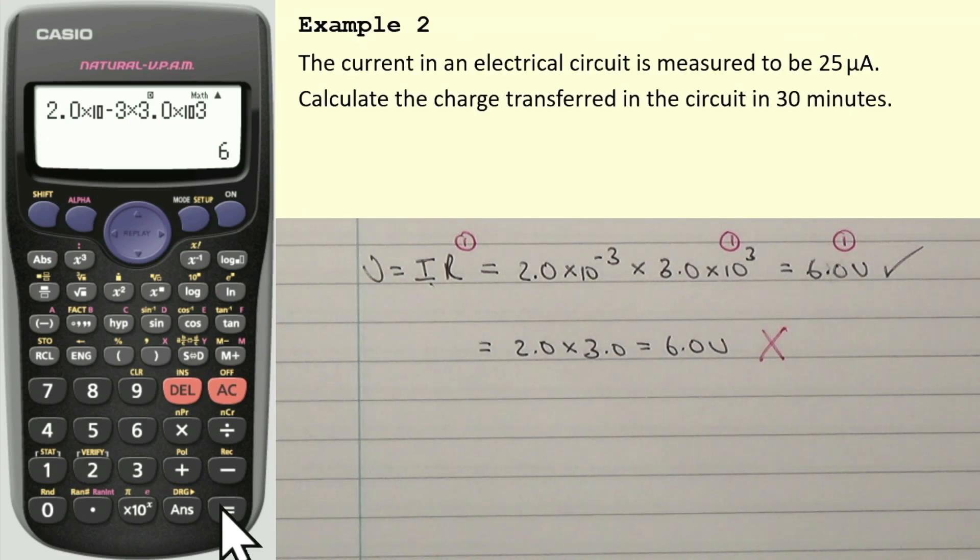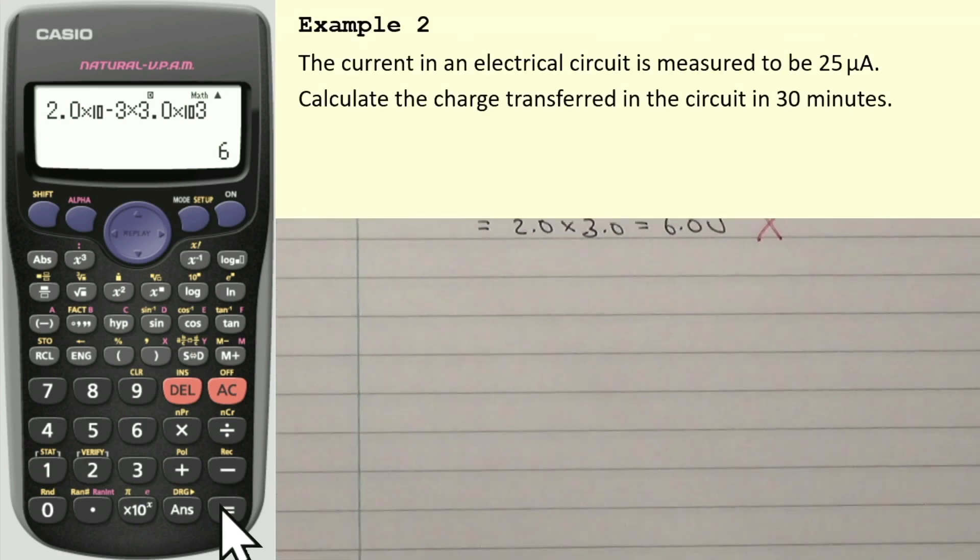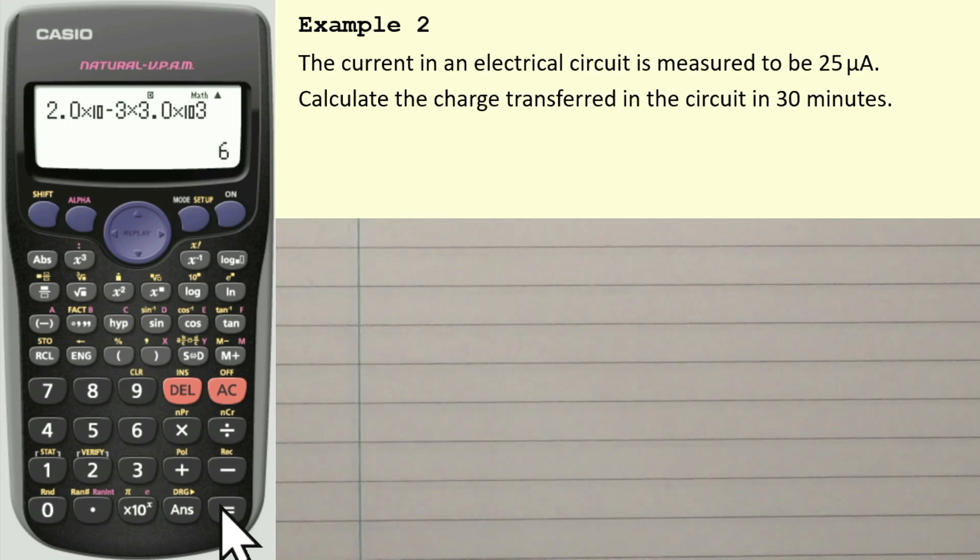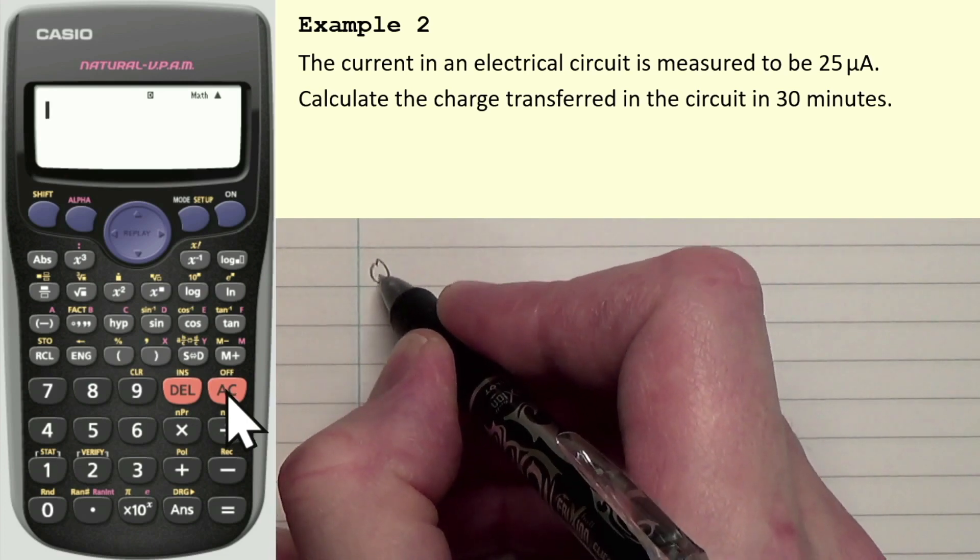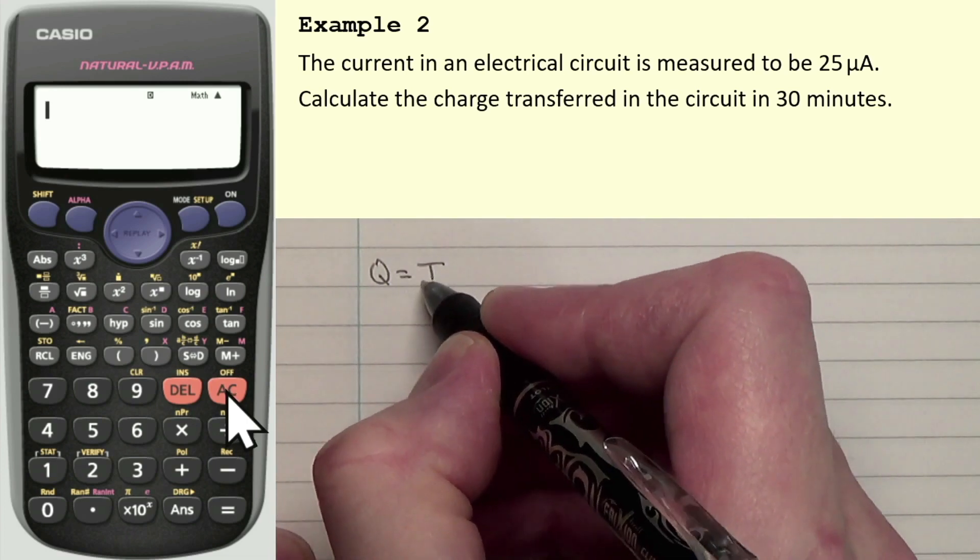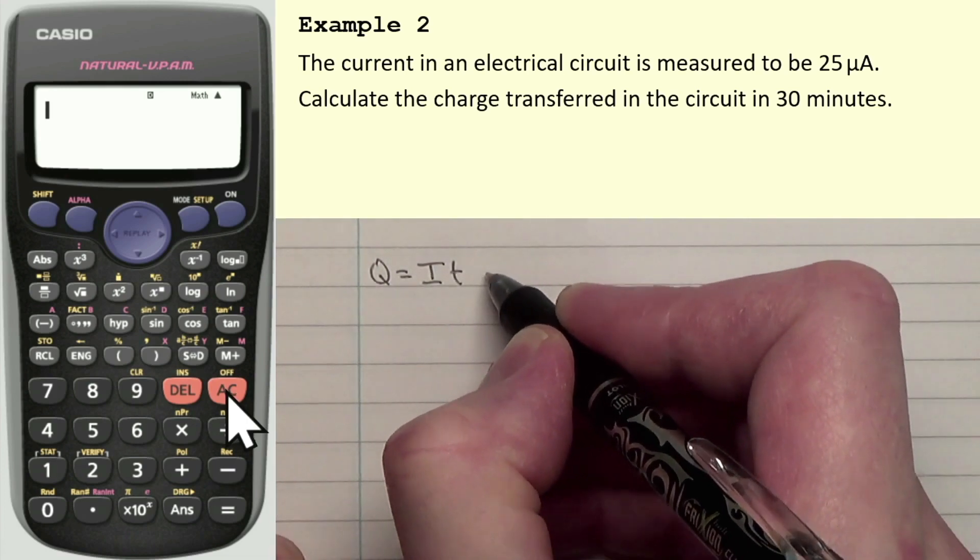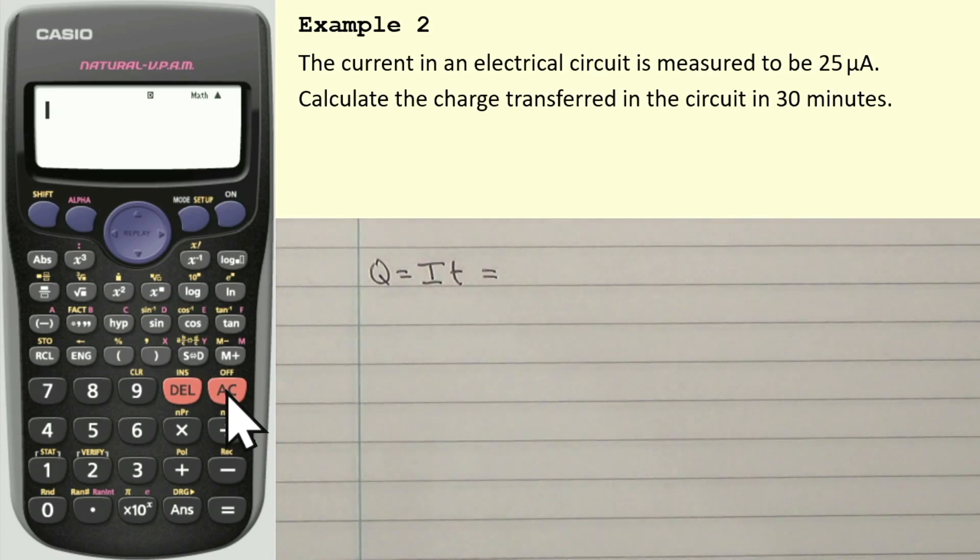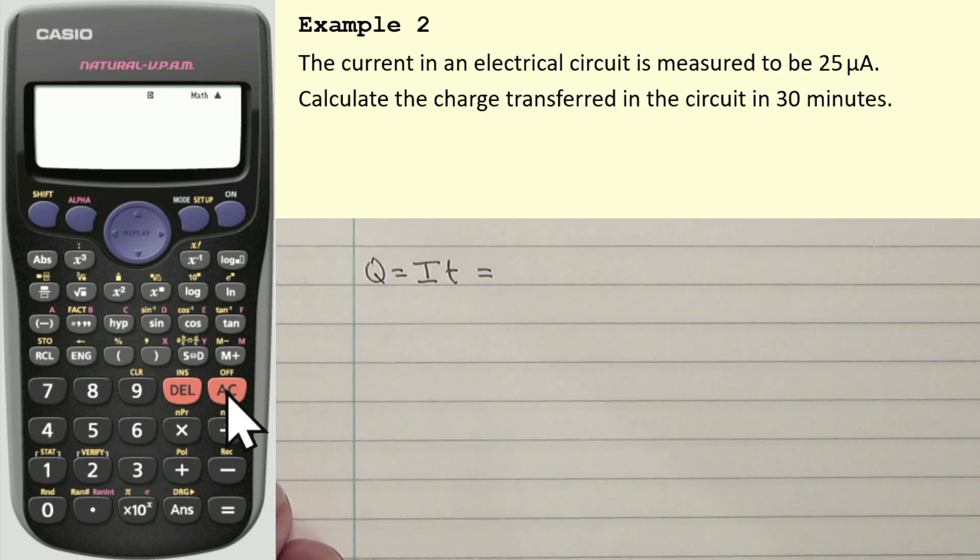Now, second example looks like so. It says, the current in an electrical circuit is measured to be 25 microamps. Do you remember what microamps was? That's times 10 to the negative 6. Calculate the charge transferred in the circuit in 30 minutes.